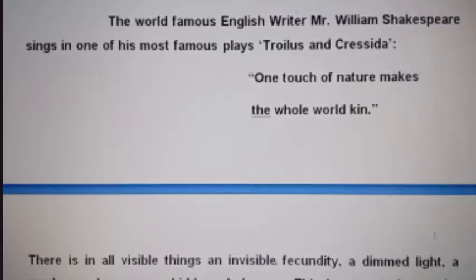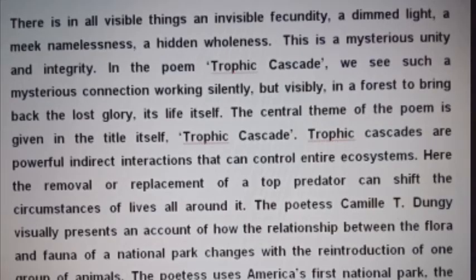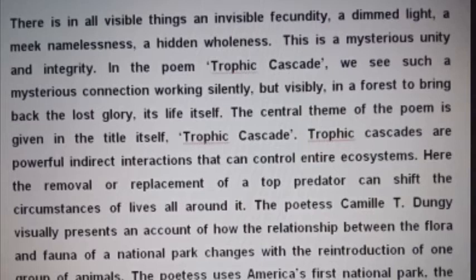The answer begins with a quote from William Shakespeare's Troilus and Cressida: 'One touch of nature makes the whole world kin.' There is in all visible things an invisible fecundity, a dimmed light, a meek namelessness, a hidden wholeness — a mysterious unity and integrity. In the poem Trophic Cascade, we see such a mysterious connection working silently but visibly in a forest to bring back the lost glory. Trophic Cascades are powerful indirect interactions that can control entire ecosystems — here the removal or replacement of a top predator can shift the circumstances of lives all around it.